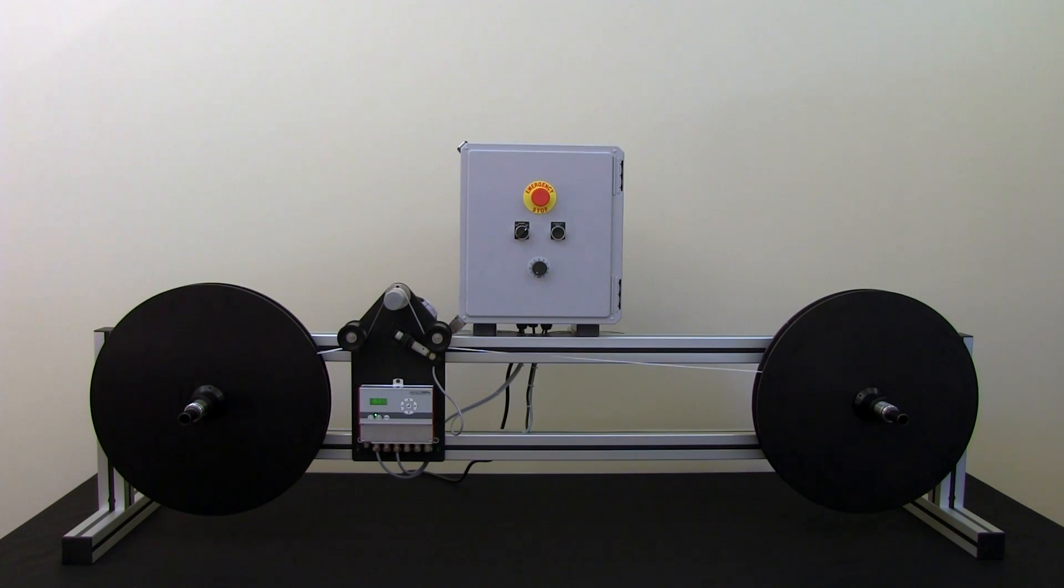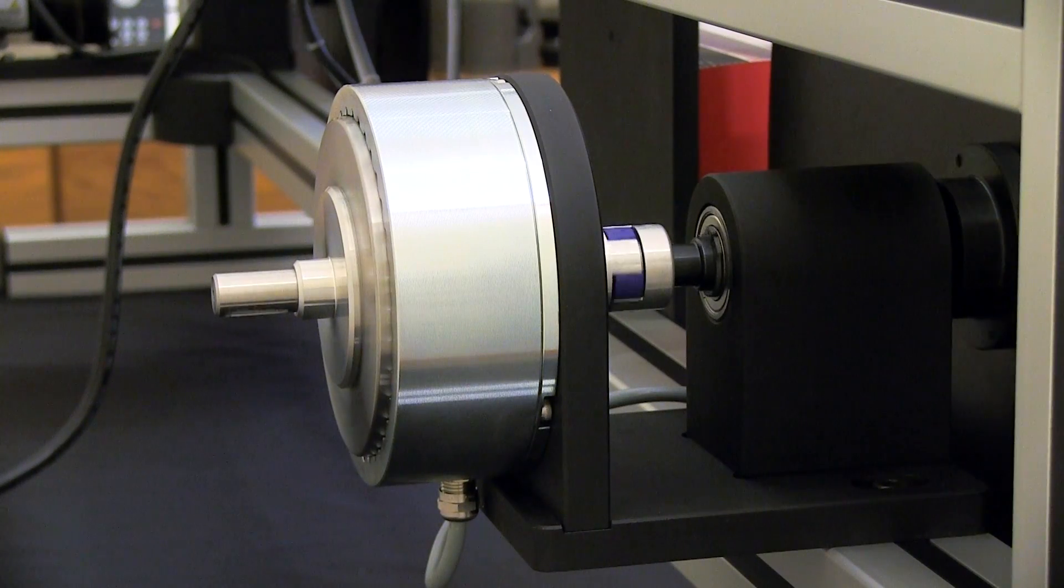Shown here is our model 1057 re-spooler. This device supplies a re-spool tension by means of an electric hysteresis brake.